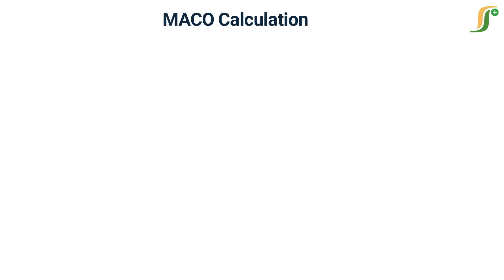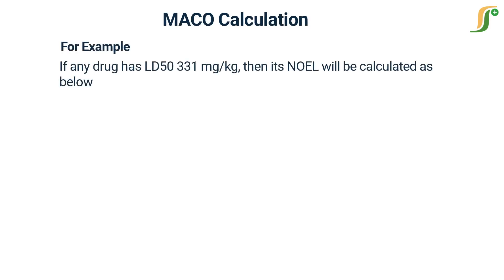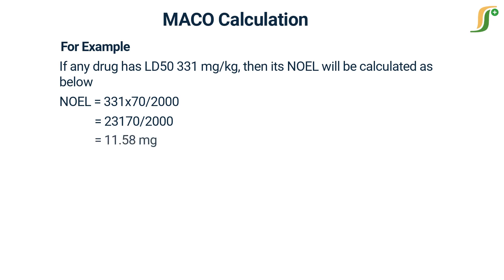For example, if a drug has an LD50 of 331 mg/kg, then its NOEL is calculated as: NOEL = (331 × 70) / 2000 = 23,170 / 2000 = 11.58 milligrams.